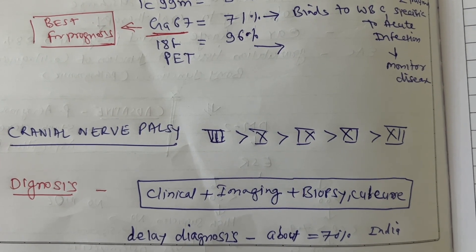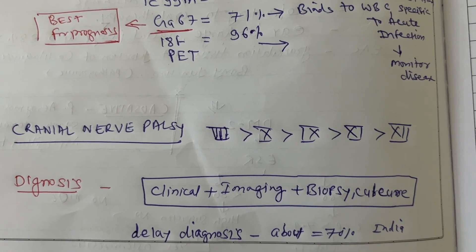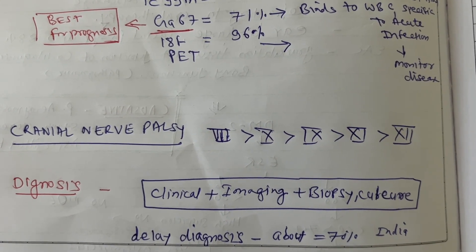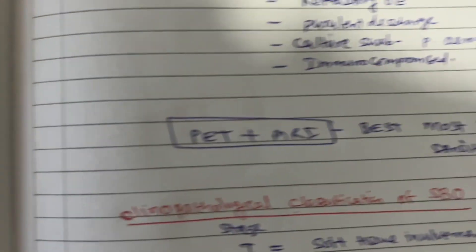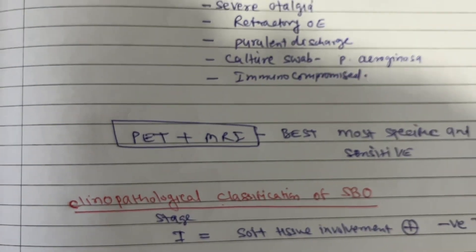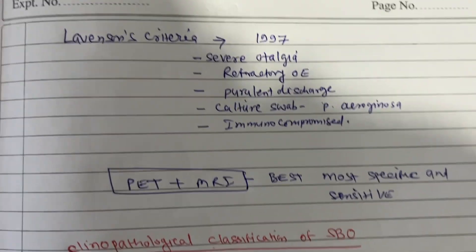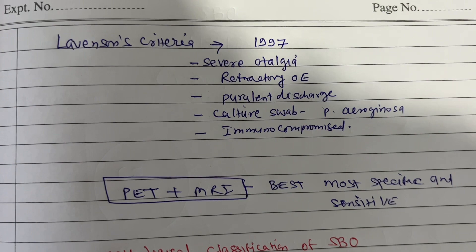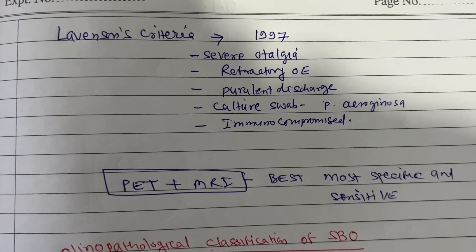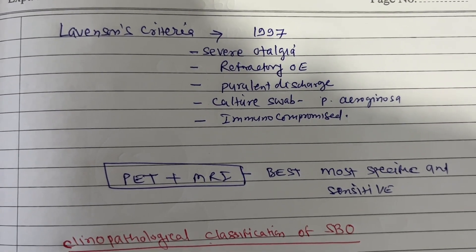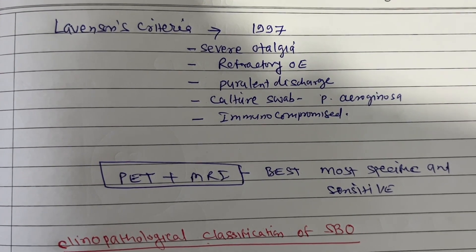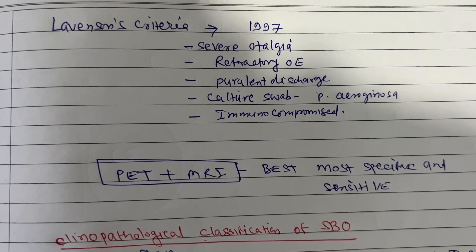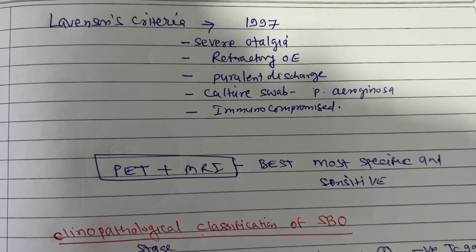Cranial nerve palsy most commonly involves the 7th nerve, followed by the 10th, then the 9th, then the 11th nerve. The hypoglossal nerve is rarely affected. Diagnosis is mainly clinical, supported by imaging and biopsy. If culture reveals Pseudomonas aeruginosa in an immunocompromised patient with CT showing spread, that confirms the diagnosis.